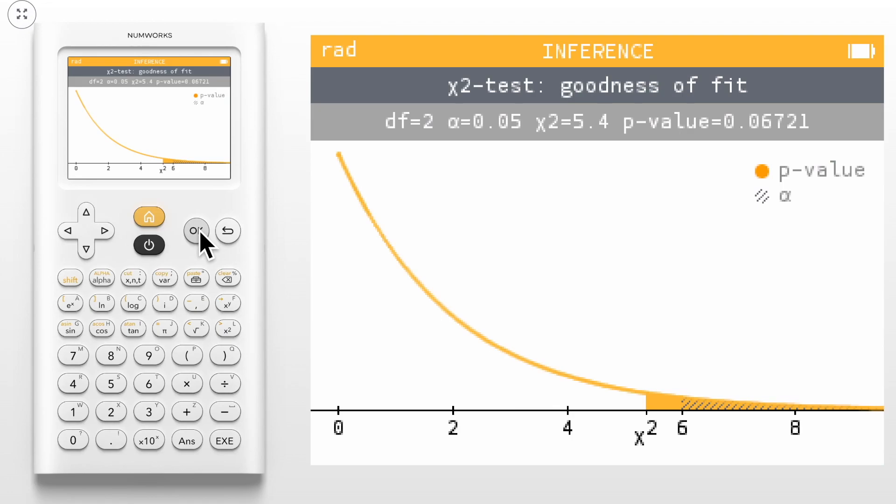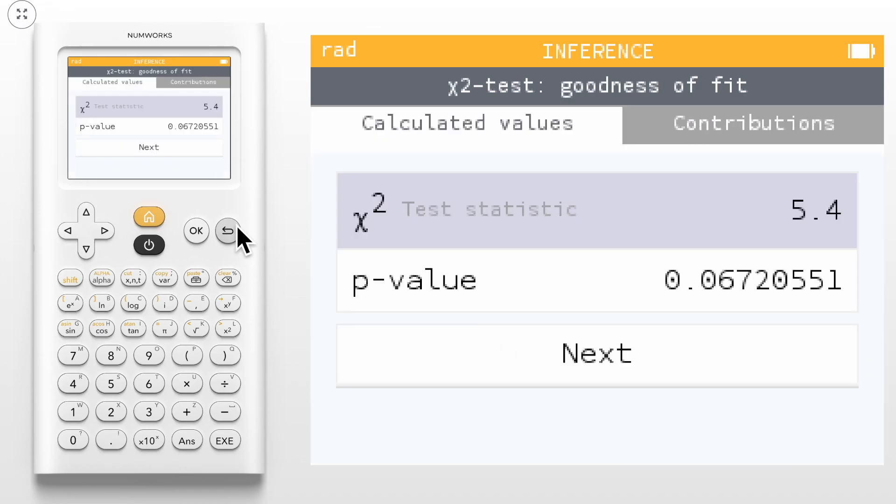You can do further analysis of the chi-squared statistics by viewing its contributions. Press the Back key to return to the calculated values screen and select the Contribution tab.